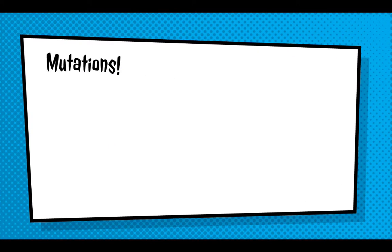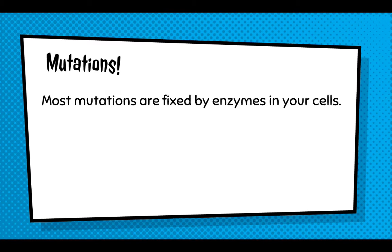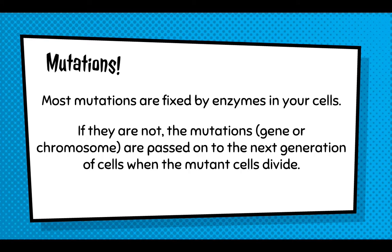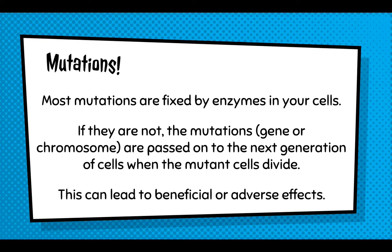A mutation — most mutations can be fixed by enzymes in your cells. If they are not, the mutation or the gene can be passed on to the next generation of cells. Anytime there's something wrong with the cell, the mutation can be passed on. Sometimes this has beneficial effects, but other times it has adverse or negative effects.